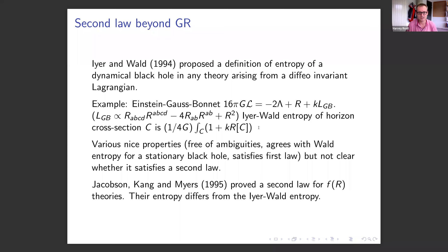For Einstein-Gauss-Bonnet theory, the Iyer-Wald entropy of a cross-section C of the event horizon is given by a formula where the first term is the usual Bekenstein-Hawking term, and the Gauss-Bonnet term gives a new contribution involving the Ricci scalar of the induced metric on the horizon cross-section. Iyer and Wald showed their proposal is free of ambiguities, agrees with the Wald entropy for stationary black holes, and satisfies the first law, but left open whether it satisfies a second law.